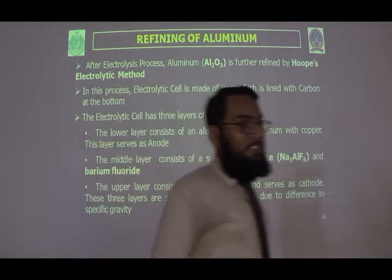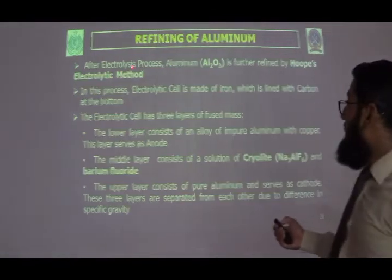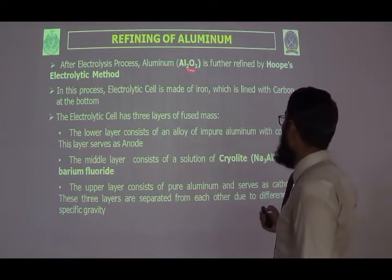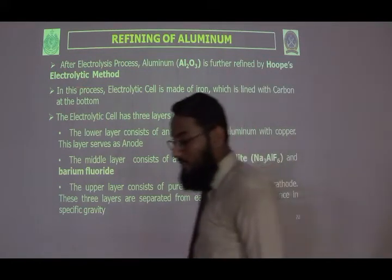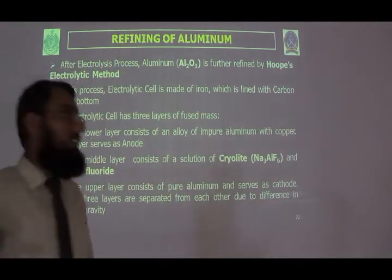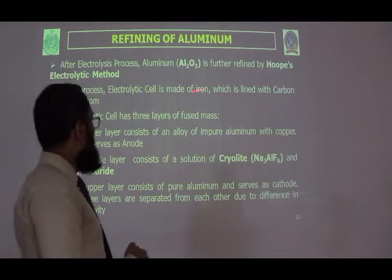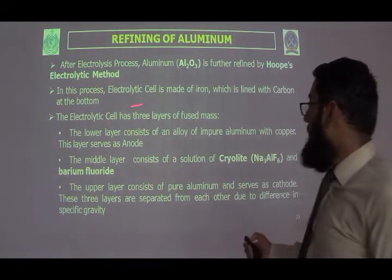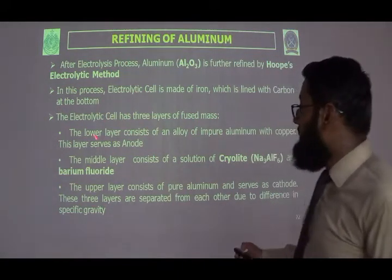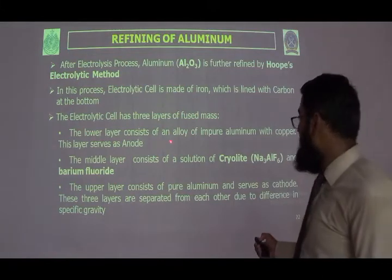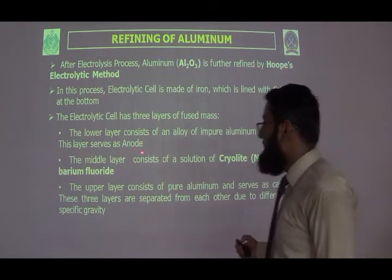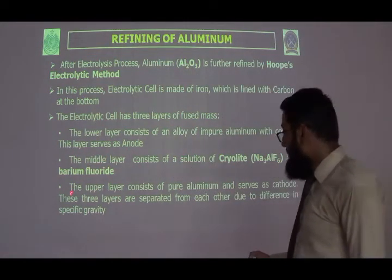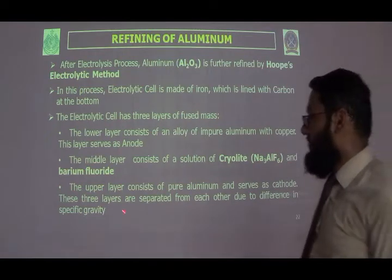After the electrolysis process, aluminium is further refined by the Hoops electrolytic method. In this method, there are three layers. The lower layer consists of an alloy of impure aluminium with copper, which acts as the anode. The middle layer consists of a solution of cryolite and barium fluoride. The upper layer consists of pure aluminium, which acts as the cathode.